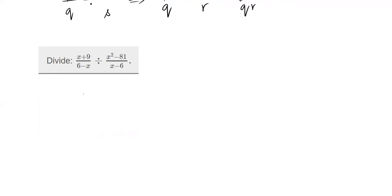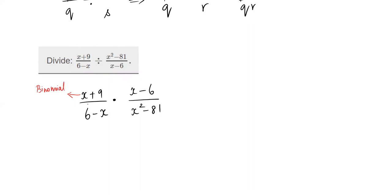Here we have (x+9)/(6−x) divided by (x²−81)/(x−6). I change the division to multiplication and flip the second fraction, putting (x−6) on top and (x²−81) in the bottom. The (x+9) binomial has nothing to simplify. The (x−6) binomial also has nothing further to do.